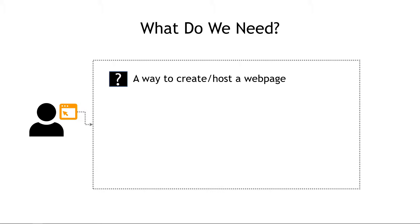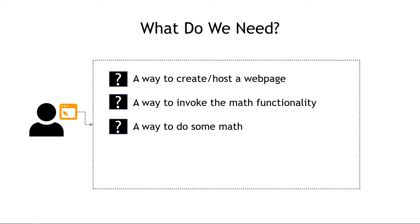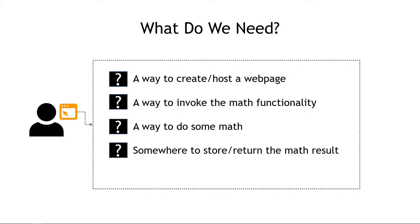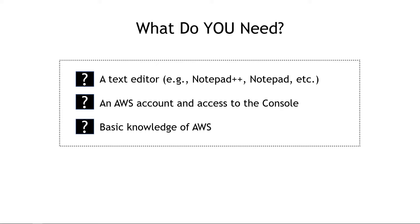What do we need to do to make this happen? Well, first, we need some way to create and host a web page — this is what your users will navigate to in their browser. We need a way to invoke the math functionality, a way to actually do that calculation, somewhere to store the result, and a way to return the result to the user. We also need to handle permissions along the way. Before I get ahead of myself: if you're following along, you'll need a text editor like Notepad++ or Notepad, an AWS account with access to the console, and a basic knowledge of AWS. This video isn't meant to be a deep dive into those five services, but to help you tie them all together into a working application. If you don't have that background, you should still be able to follow along.